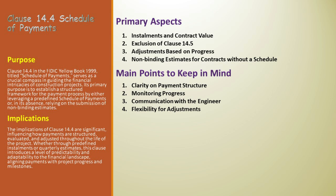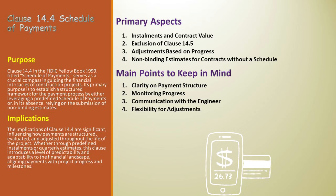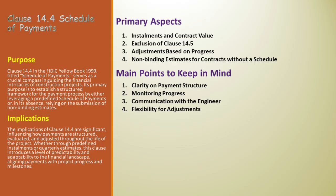Adjustments based on progress. The clause recognizes that project execution may not always align with a planned schedule. Therefore, if actual progress deviates from the planned installments, the engineer is empowered to revise these installments, taking into account actual progress versus initial estimates. In scenarios where the contract doesn't include a schedule of payments, the contractor must provide quarterly non-binding estimates of expected payments, starting from 42 days after the commencement date and continuing until the taking-over certificate is issued.